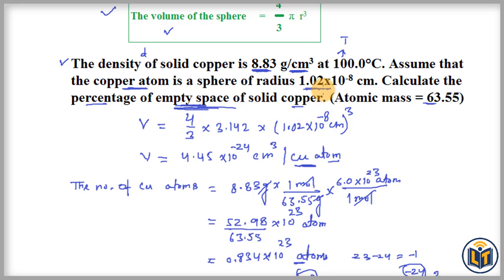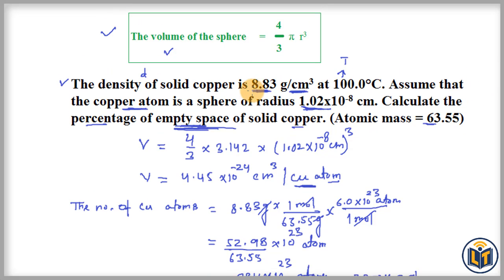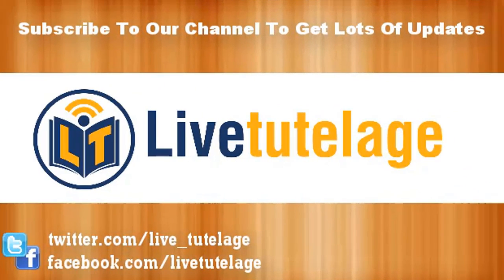To summarize: first I calculated the volume of one single copper atom, then I calculated the total volume of all atoms present in 8.83 grams of the substance, then I found the empty space, and finally I applied the formula for the percentage of empty space in solid copper.